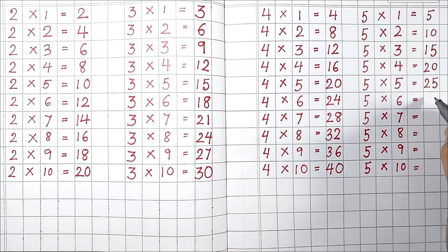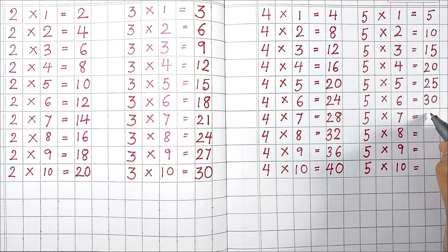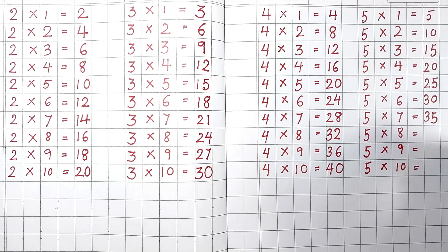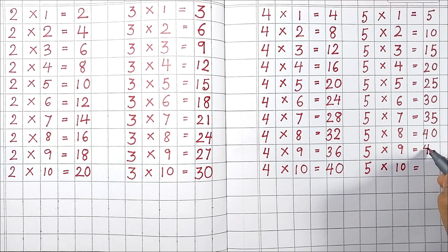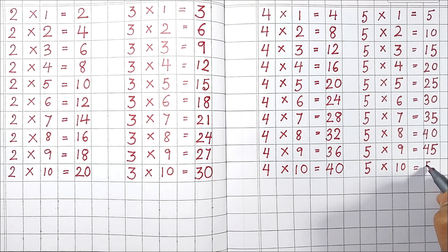5 6's are 30. 5 7's are 35. 5 8's are 40. 5 9's are 45. 5 10's are 50.